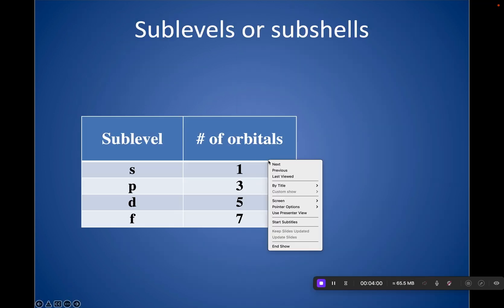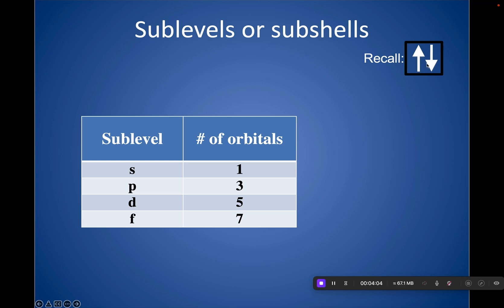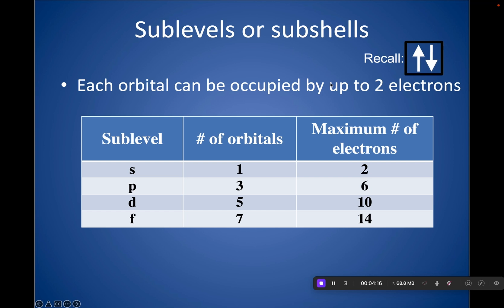And if you remember, when we were doing our orbital notation, we said that we would always put a max of two electrons, and if we did put a max of two electrons, we would put one up and one down arrow showing that they have opposite spins, and that was like the Pauli exclusion principle, right?